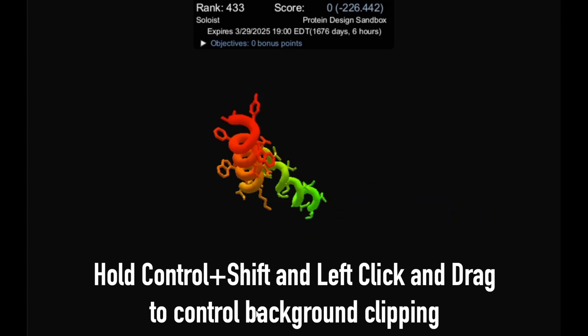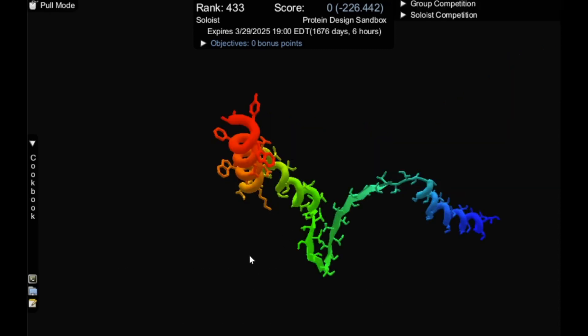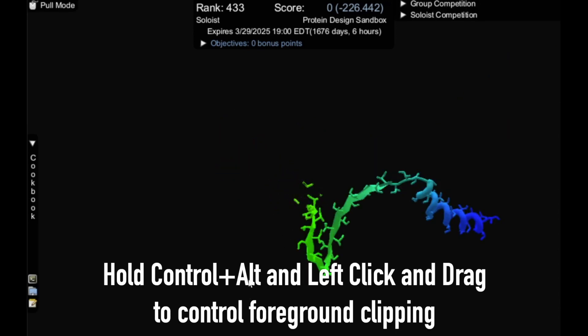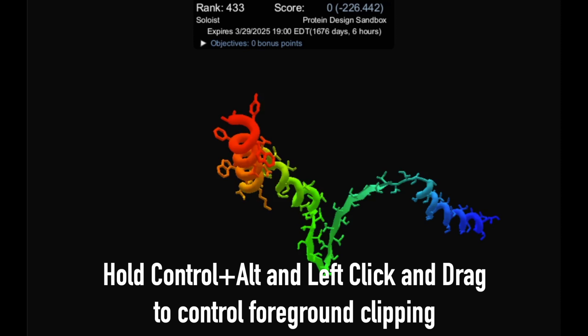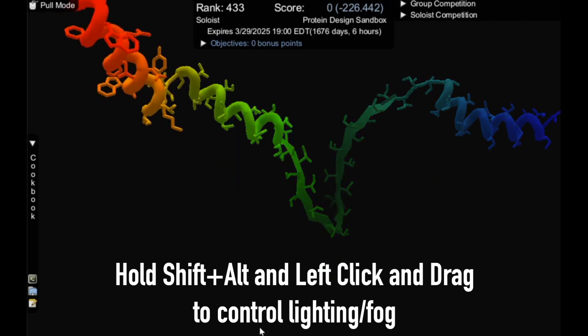If you hold CTRL and SHIFT and left click and drag, you can control the background clipping. CTRL and ALT and left click and drag controls the foreground clipping. SHIFT and ALT and left click and drag controls the lighting or fog.